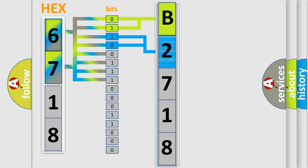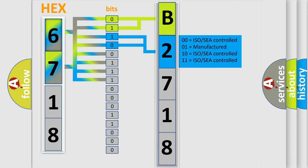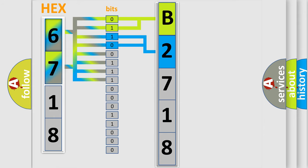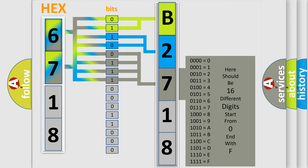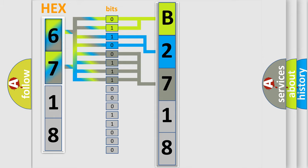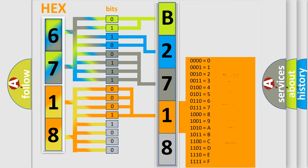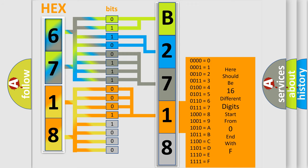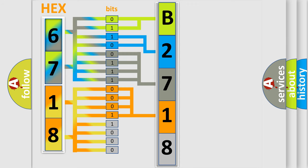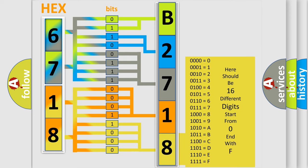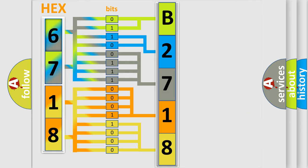The next two bits determine the second character. The last bits of the first byte define the third character of the code. The second byte is composed of a combination of eight bits. The first four bits determine the fourth character of the code, and the combination of the last four bits defines the fifth character. A single byte conceals 256 possible combinations. We now know in what way the diagnostic tool translates the received information into a more comprehensible format.